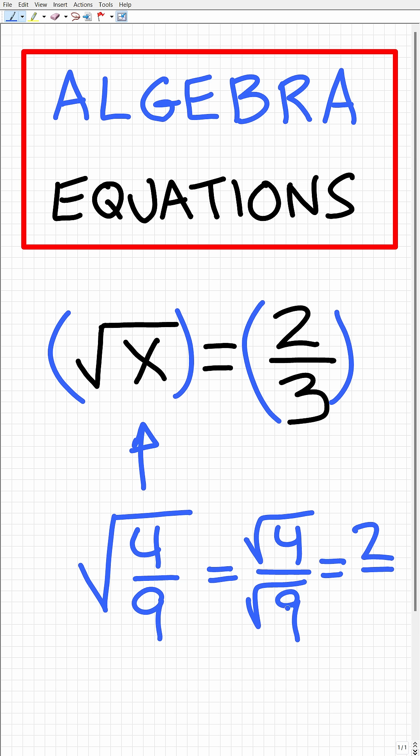The square root of four is of course equal to two, and the square root of nine is equal to three. So we can see that the square root of four ninths is indeed equal to two thirds, meaning that four ninths is a good solution.